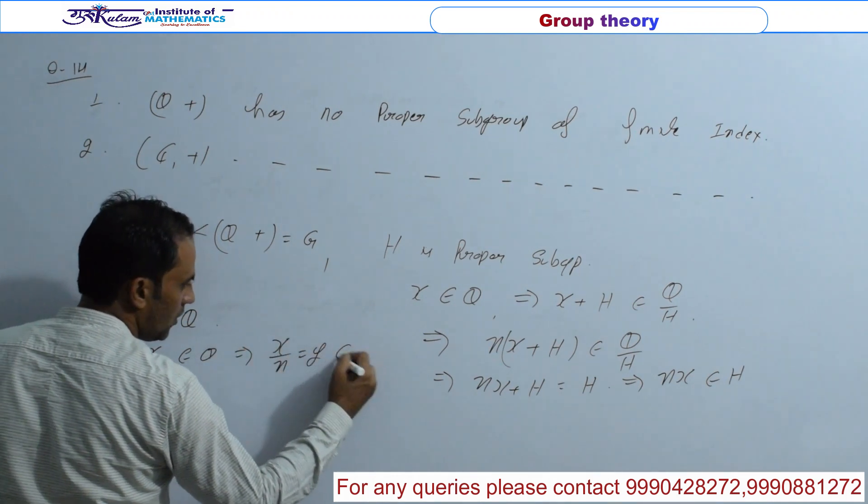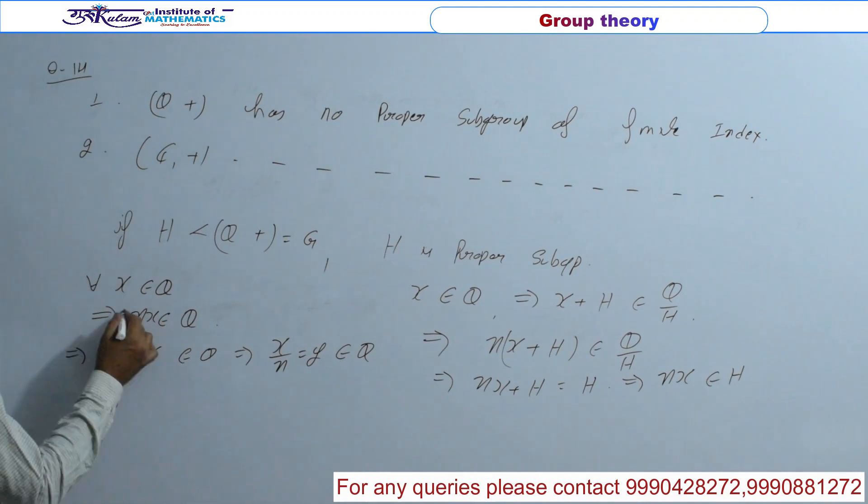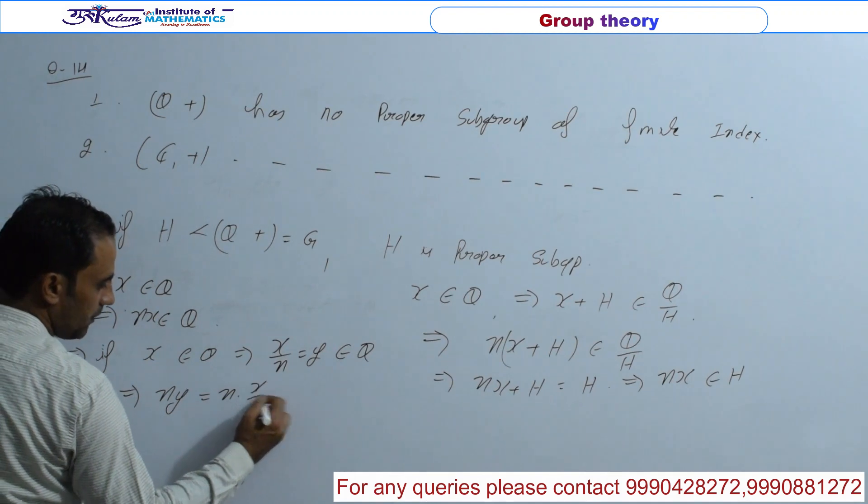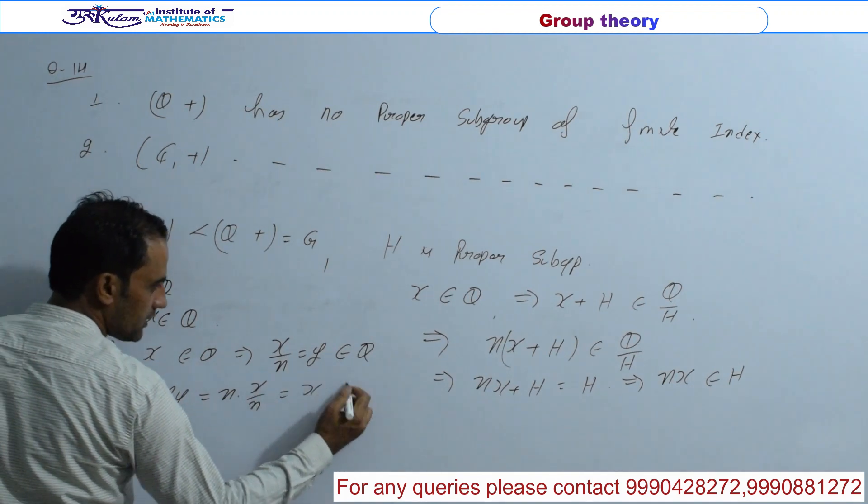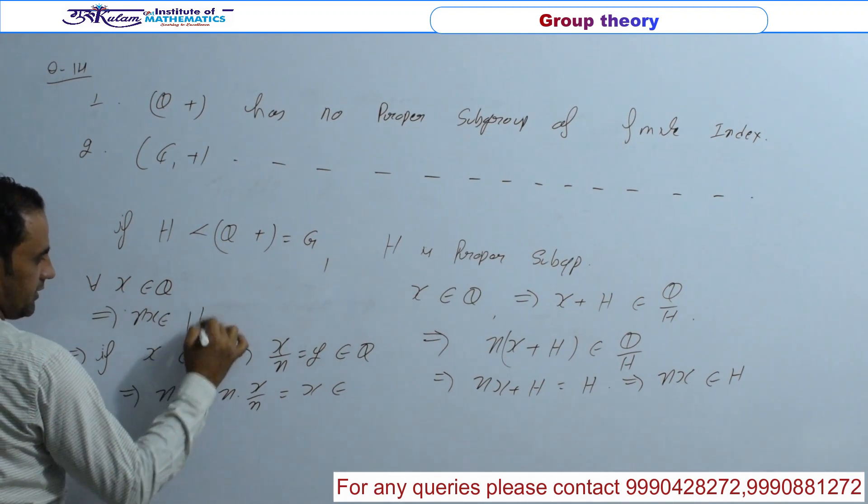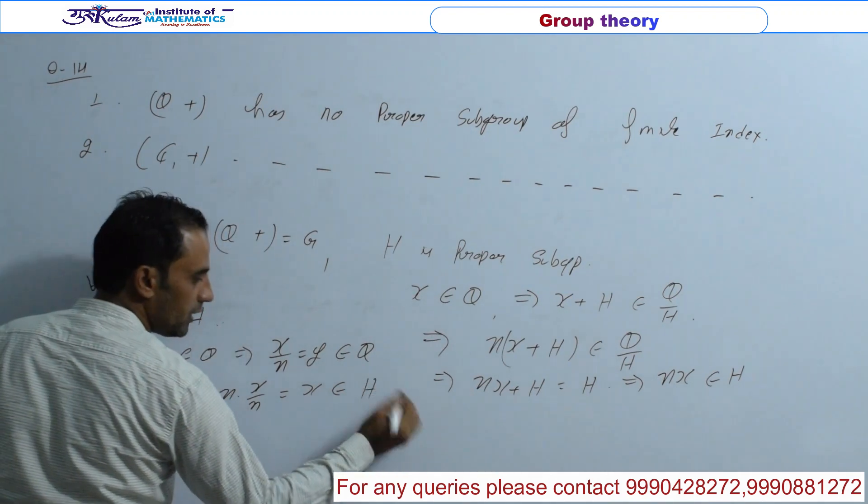और इस property से N of Y which is equal to N times X by N which is equal to X. Sorry, this is H. This is belonging to H हो जाएगा.